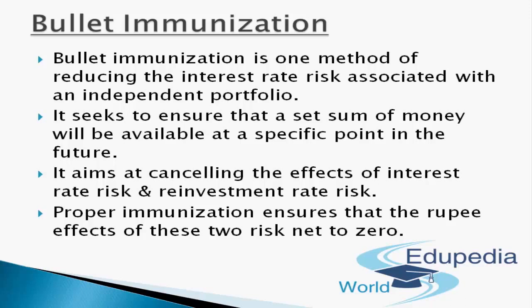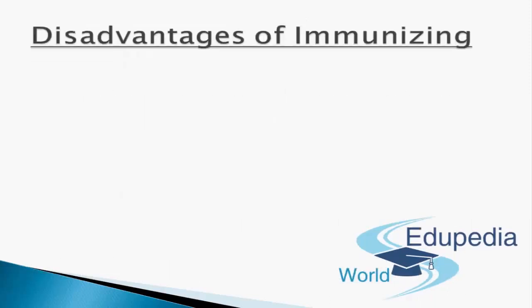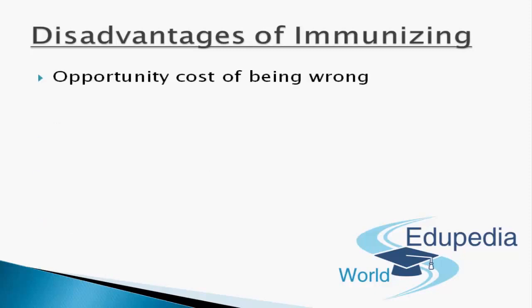With every advantage come disadvantages. Immunization does help in protection of funds against market interest rate risk, but it also has some disadvantages. The first disadvantage is the opportunity cost of being wrong. Investment strategies are based on assumptions about the future direction of interest rates or that future rates will be volatile. If the market is efficient, forecasting changes in interest rates is very difficult. With an incorrect forecast, immunized portfolios can suffer a heavy opportunity loss.